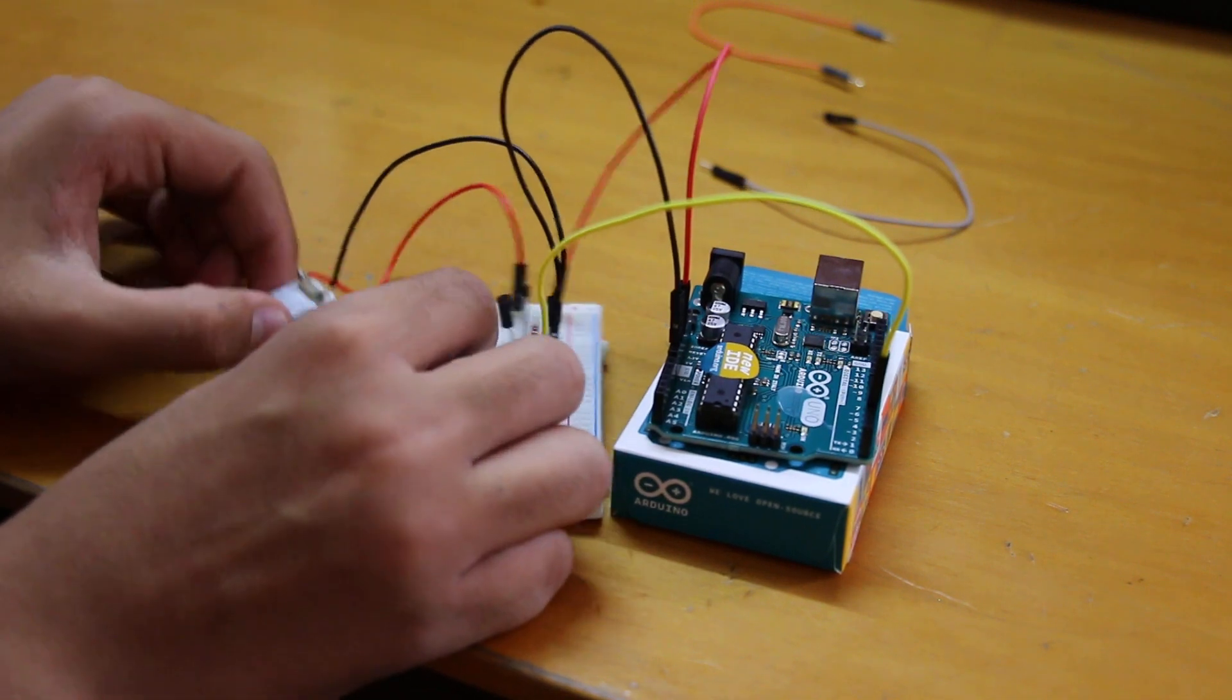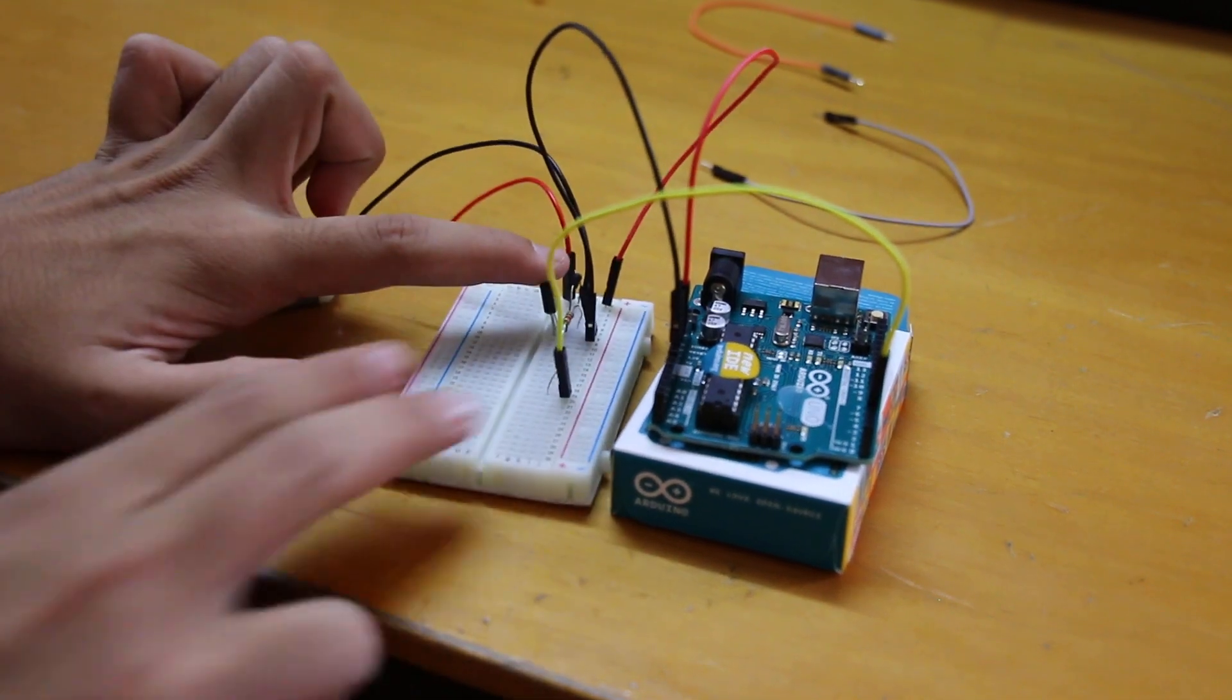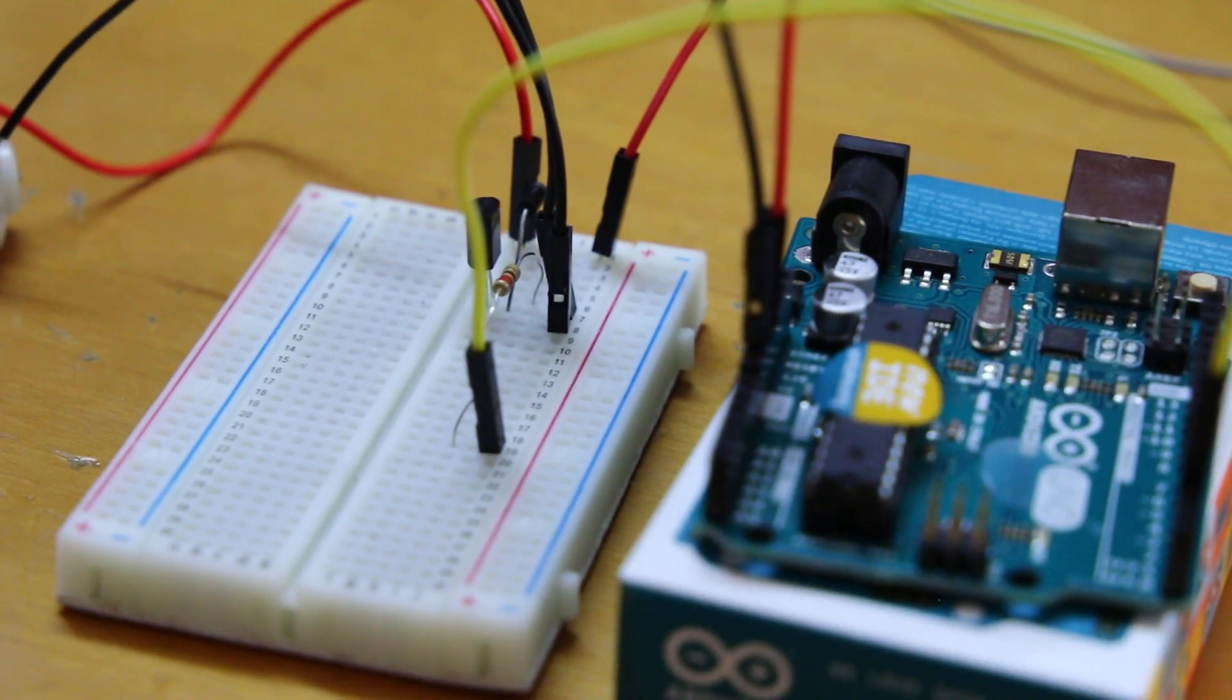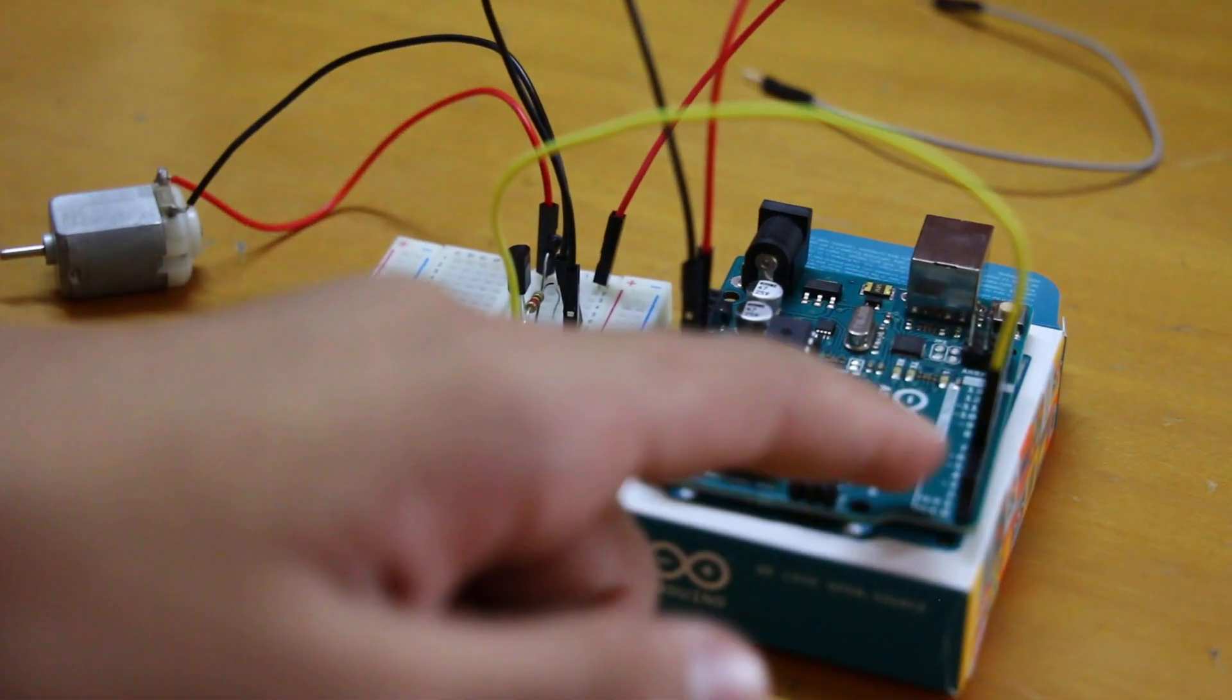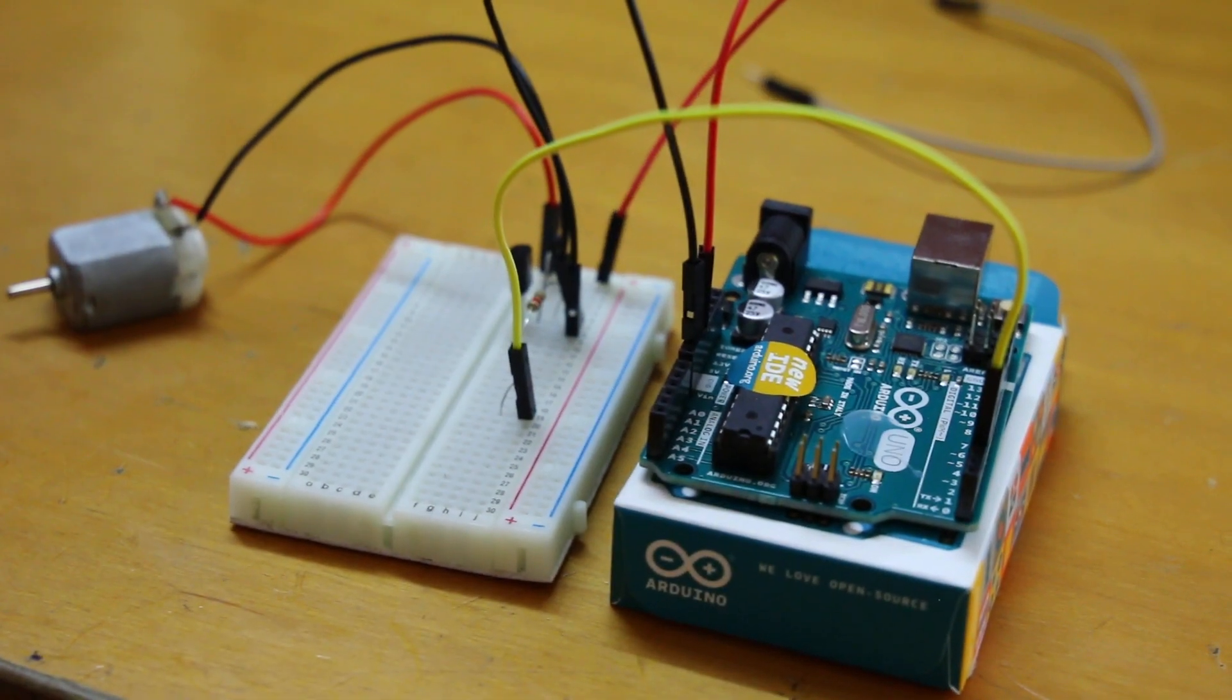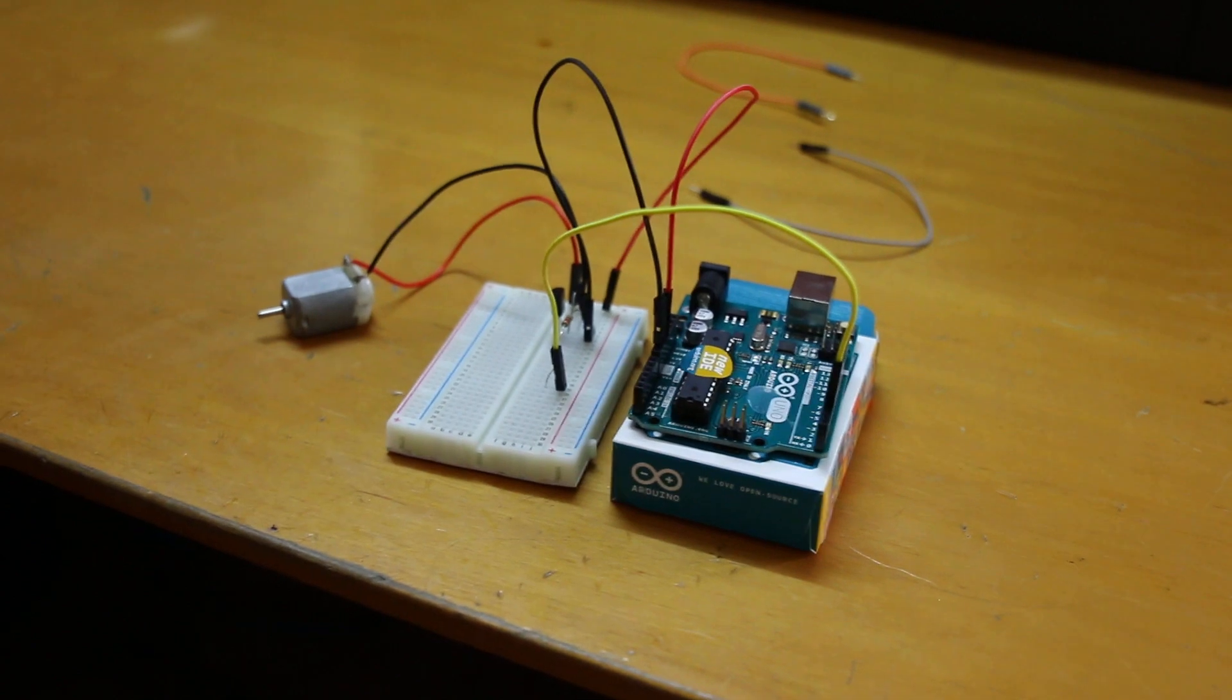So now we have that connected. The transistor is basically acting as a switch here so that we can turn on and off the motor using the Arduino PWM pins, which is the analog pins. So now we have completed the circuit. And now we should code the thing.